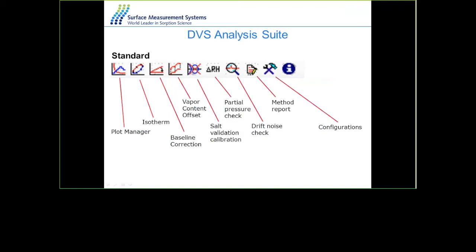The analysis software offers three tiers of macros. The standard macro includes the plot manager for plotting mass data and isotherms, isotherm analysis software for plotting adsorption and desorption isotherms, baseline corrections for long experiments with any drifts, and the ability to compare target against actual vapor concentrations.